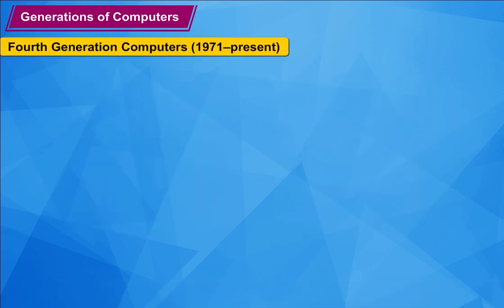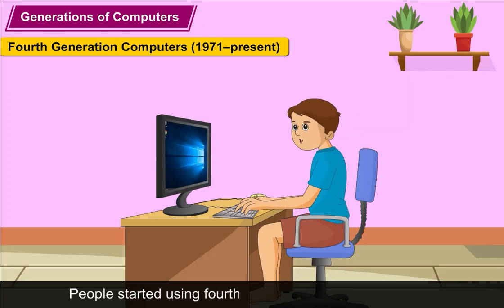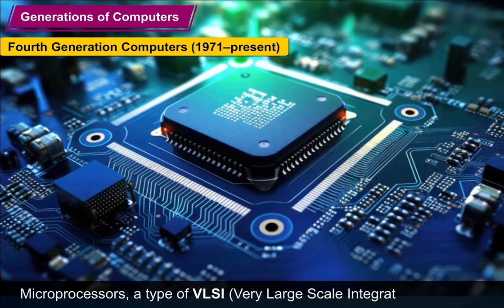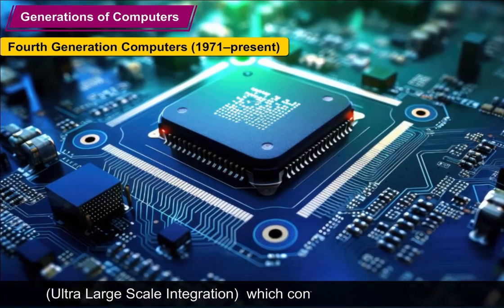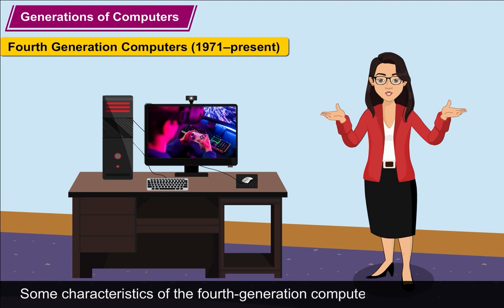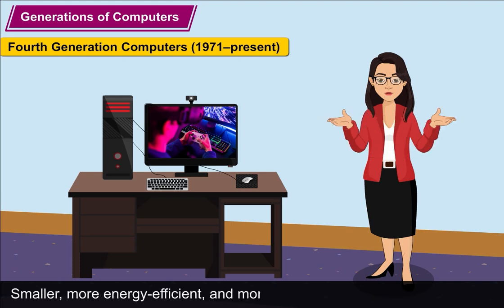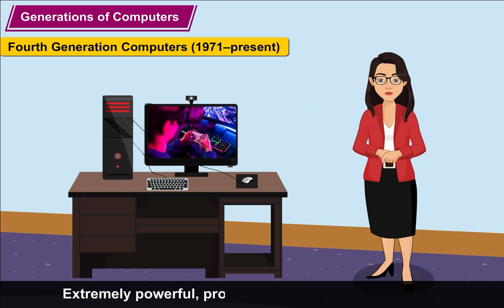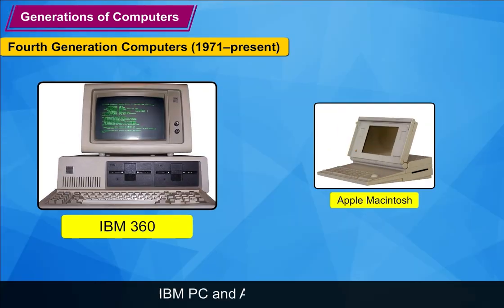Fourth Generation Computers (1971–present): People started using fourth generation computers in 1971 and continue to do so today. Microprocessors — a type of VLSI (very large-scale integration) and ULSI (ultra-large-scale integration) — contain all the components of a CPU on a single chip. Characteristics include: smaller, more energy efficient, and reliable than previous generations; advanced processing and memory capacities; enabled the development of personal computers (PCs); support for computer networks, leading to the creation of the Internet; and extremely powerful, processing millions of instructions in a fraction of a second. Examples include IBM PC and Apple Macintosh.